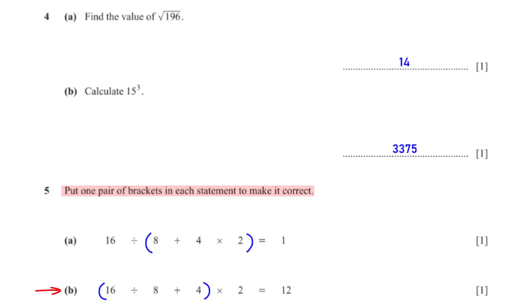To make this correct, we put a pair of brackets around 16 divided by 8 plus 4. 16 divided by 8 plus 4 is 6. So 6 times 2 is 12.